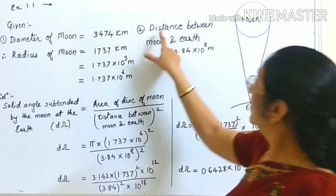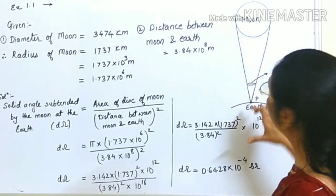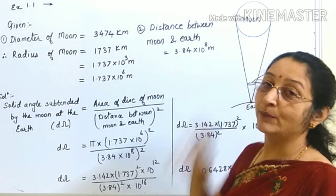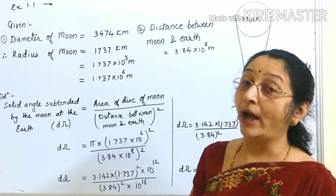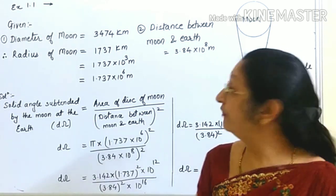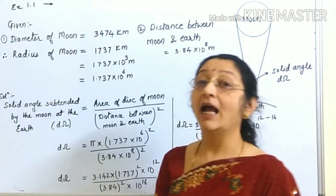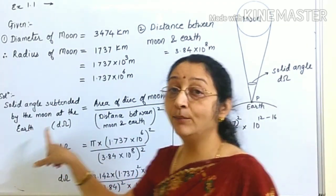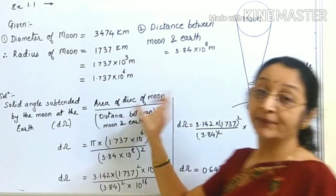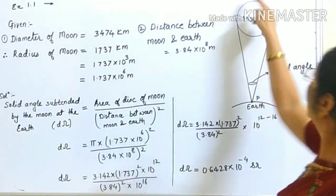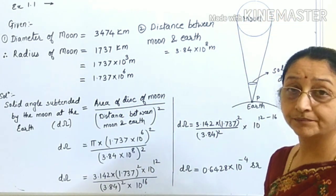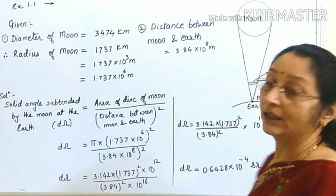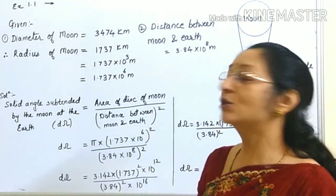The distance between the moon and the earth is given as 3.84 × 10⁸ meters. According to the formula for solid angle, the solid angle subtended at any point on the earth by the moon equals the area of the disk of the moon divided by the square of the distance between the moon and the earth.